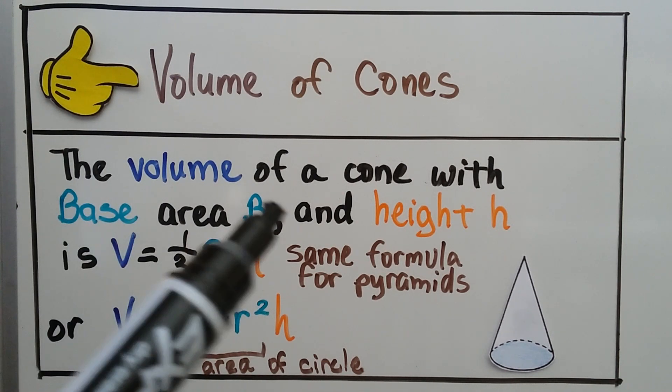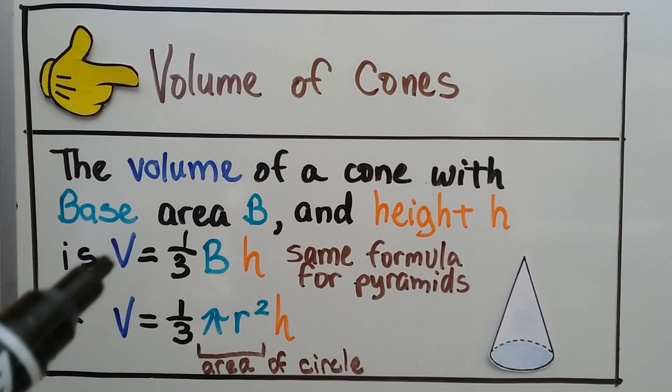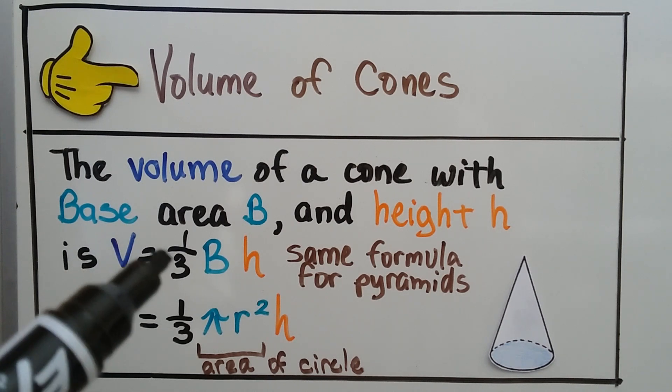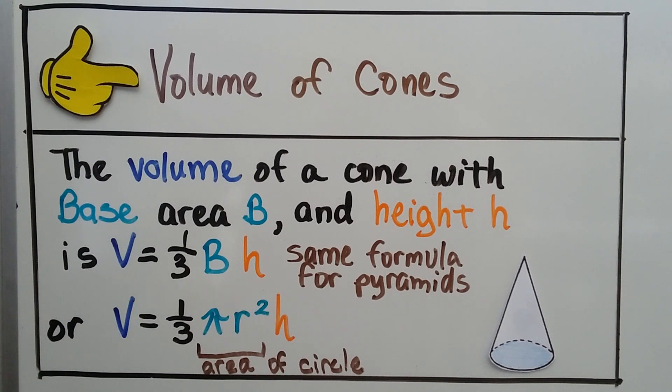If it has a base area B and a height h, our formula is V for volume equals one-third times the base times the height. It's the same formula for pyramids. We could also do the volume is equal to one-third pi r squared h, and this pi r squared would be the area of the circle times the height, the base times the height.